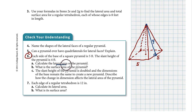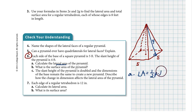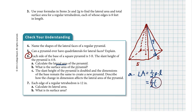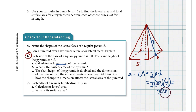Question A asks for lateral area. Lateral area for a pyramid is one-half times the perimeter times the slant height. The perimeter is 5 + 5 + 5 + 5 = 20. The slant height is 4. Half of 20 is 10, and 10 times 4 is 40 square feet. That's the lateral area, which includes all four triangle faces.